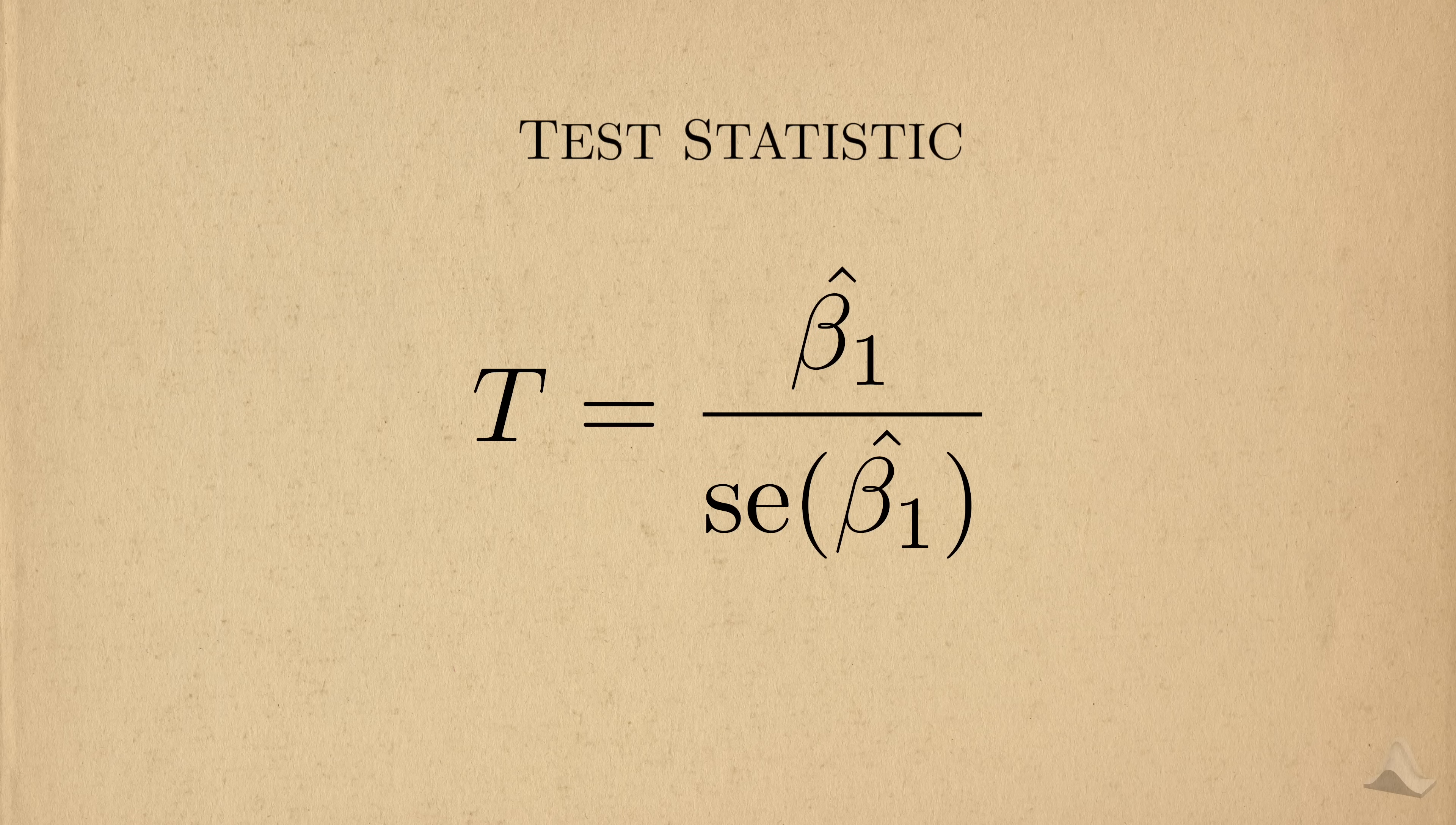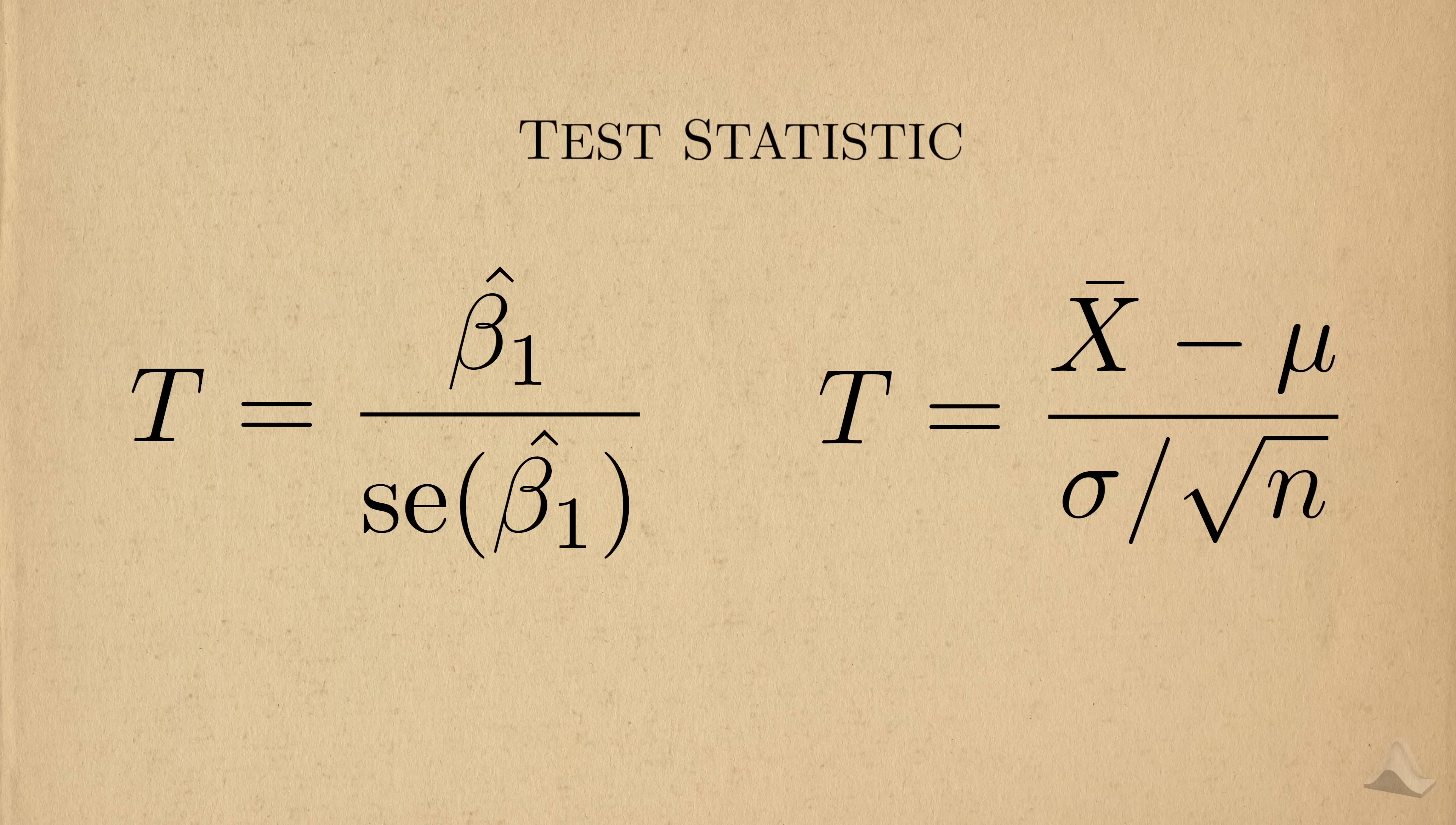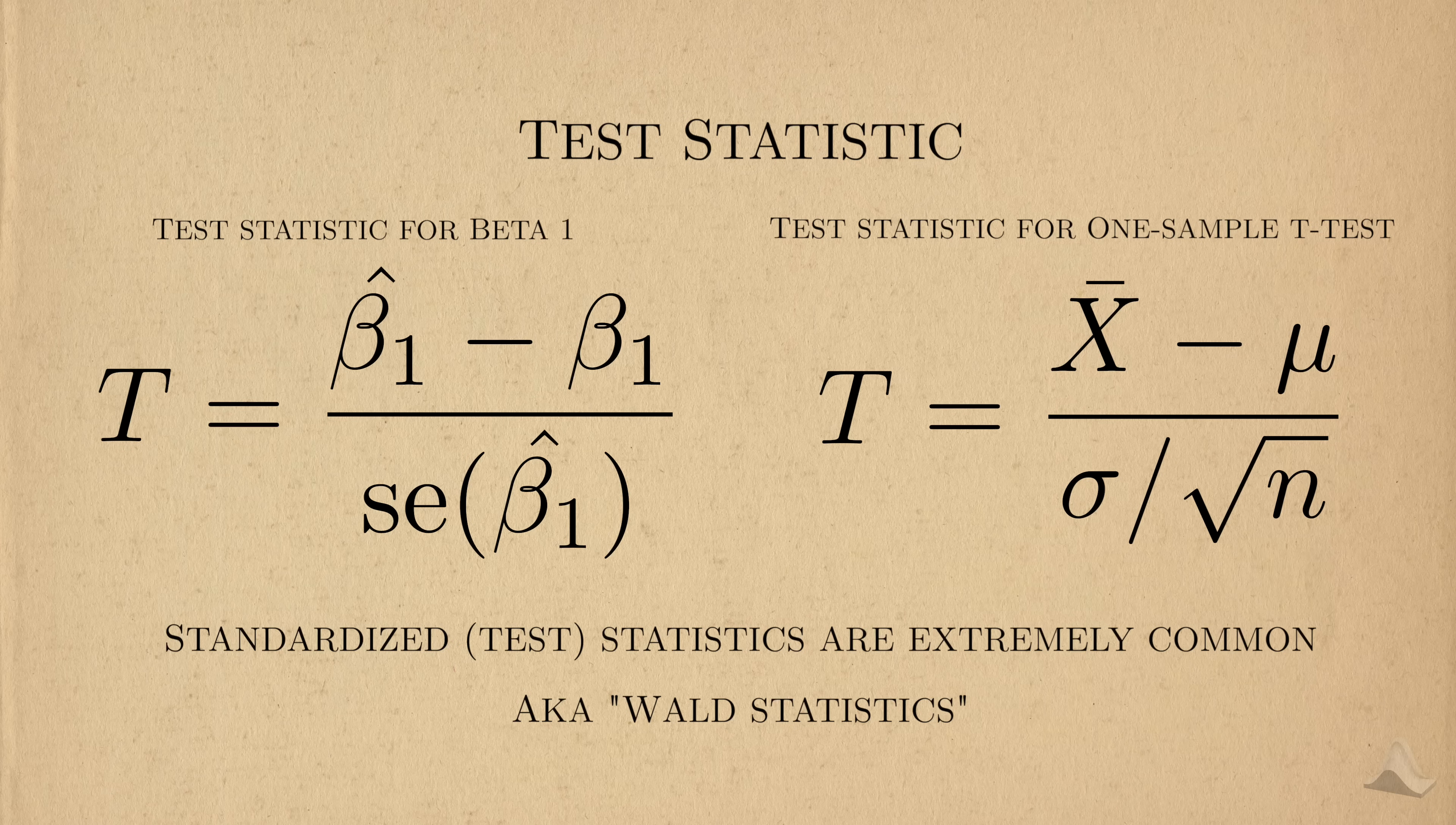To construct the test statistic for the hypothesis test, we'll need both the estimated value for beta 1 and its corresponding standard deviation. Hopefully this might look a little familiar. Maybe if I bring up this equation and add a zero here, it might jog a few memories. This is the test statistic for testing beta 1, and it looks just like the test statistic for the 1 sample t-test. That's not by accident. Standardized statistics are extremely common, and they even have a special name. A Wald statistic, named after the statistician Abraham Wald.